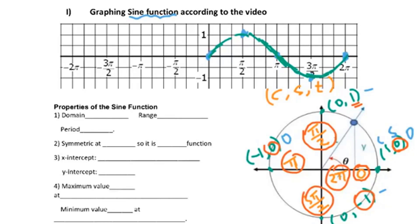That's the graph for the sine function. Then you can extend the graph to the left side, so the pattern will be like this — it's like a wave.